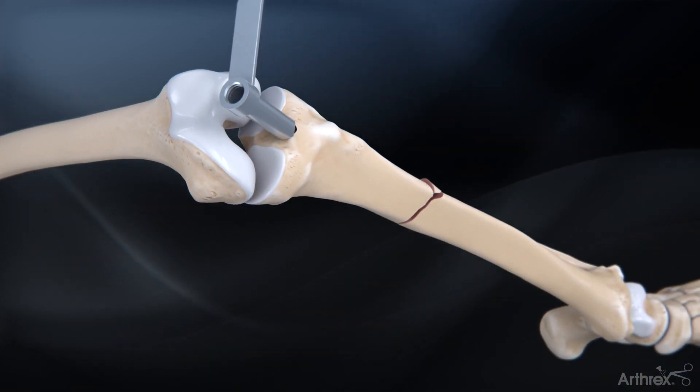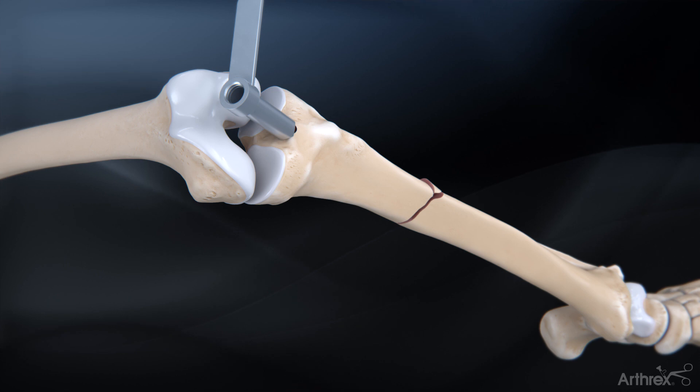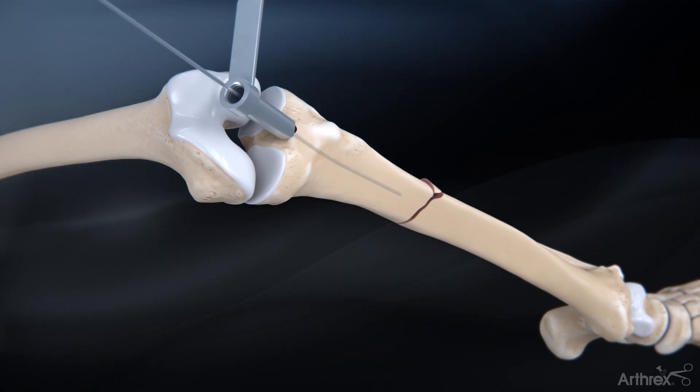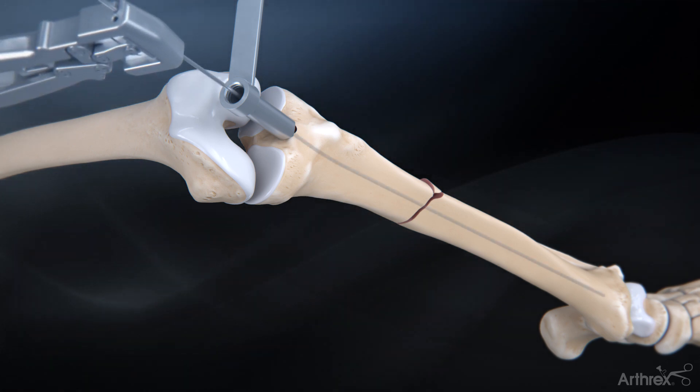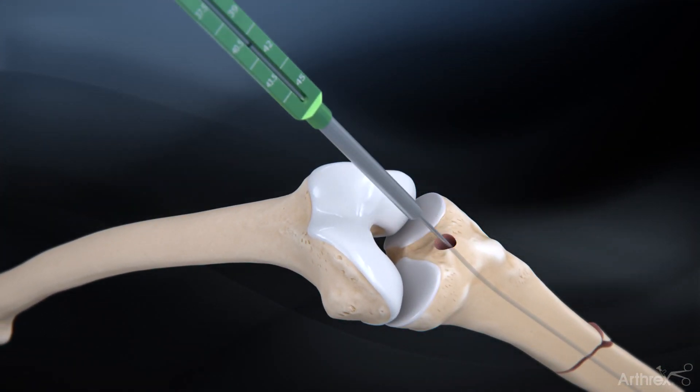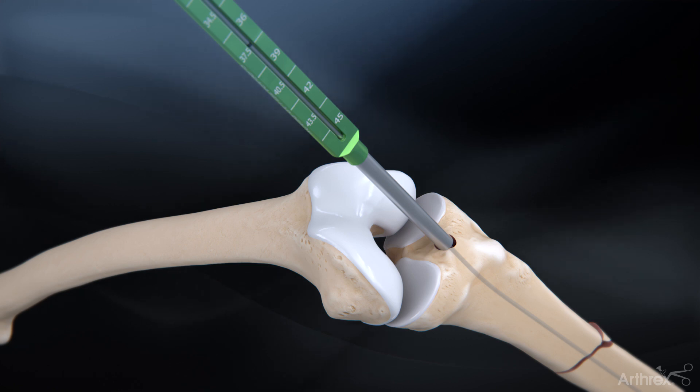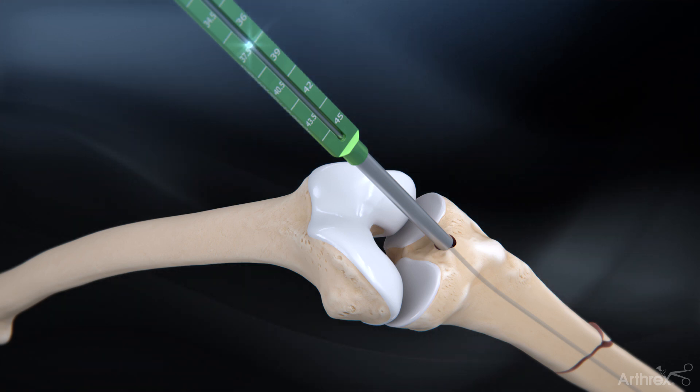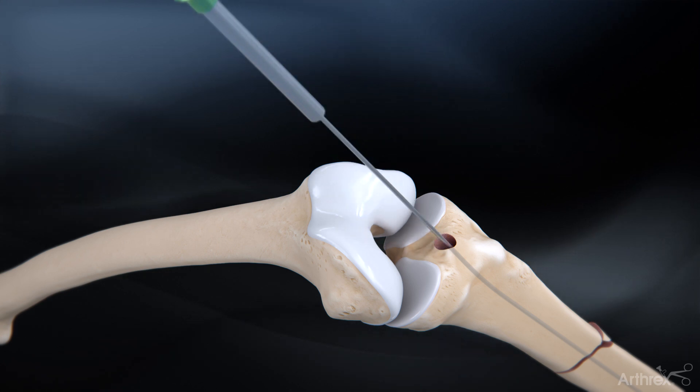After accessing the tibial canal, insert the 3.0 mm ball nose guide wire down the shaft of the tibia and past the fracture using the guide wire gripper. With the tip of the guide wire at the desired depth, measure the length of the nail by sliding the guide wire depth gauge over the guide wire and reading the measurement based on the etched line.